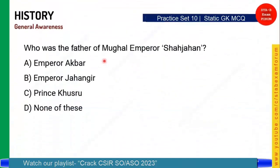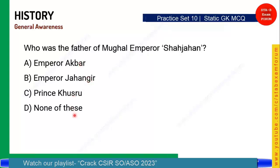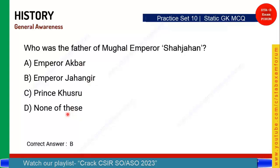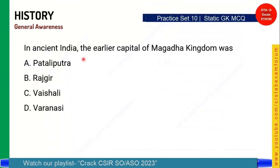Who was the father of Mughal emperor Shahjahan? Taj Mahal was built by Shahjahan. The options are Akbar, Jahangir, Khusrau, or none of these. The correct answer is Option B — Jahangir. The father of Shahjahan is Jahangir, and the son of Jahangir is Shahjahan.